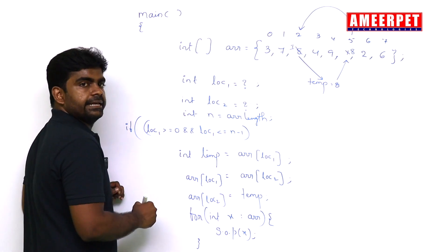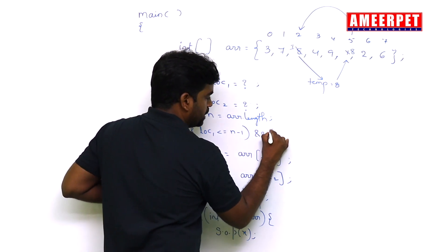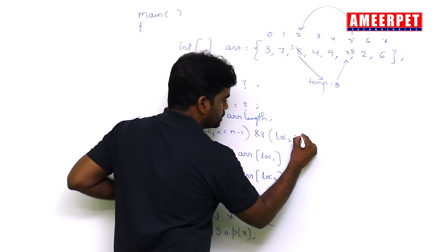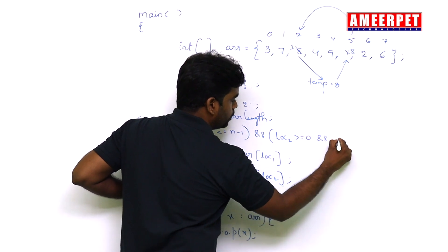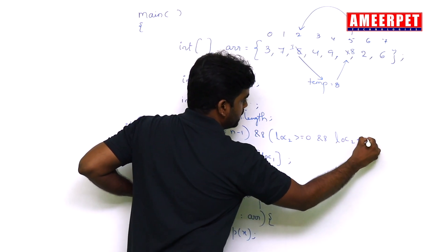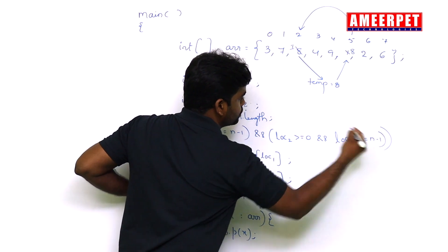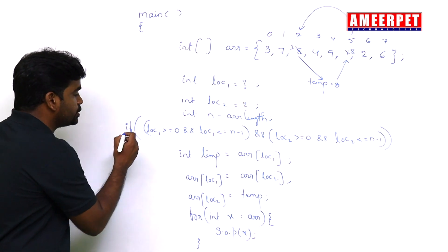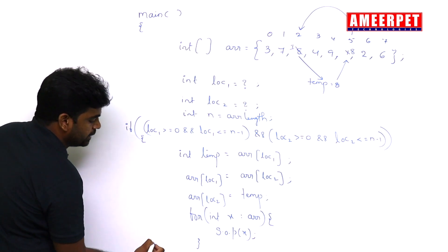It should be in the range and even location 2 also greater than or equal to 0 and less than or equal to n minus 1. This is checking the location is valid or not.